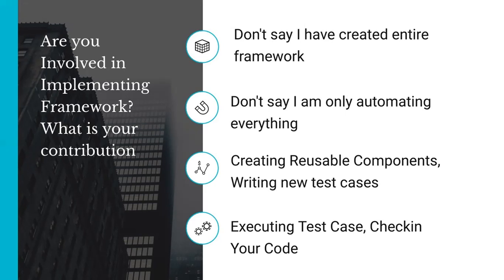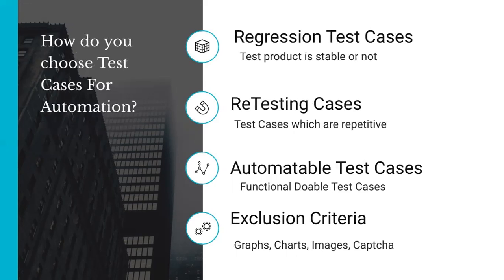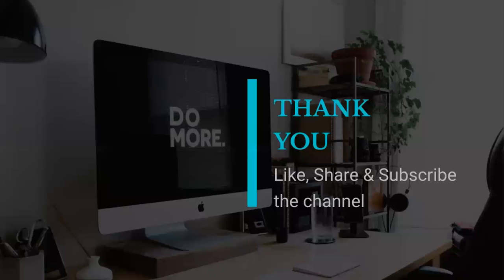So these are all the things you should tell when asked whether you are involved in implementing the framework. To summarize, we discussed three important questions you will surely get in an automation interview: how do you choose test cases for automation, what tools do you use for automation, and are you involved in implementing the framework and what is your contribution. Keep these details in mind, remember the do's and don'ts, and prepare yourself in a better manner for an interview. Don't lose hope, stay motivated. Thank you for watching — please share with your friends so that more people in the community can get help. Stay tuned for more videos.